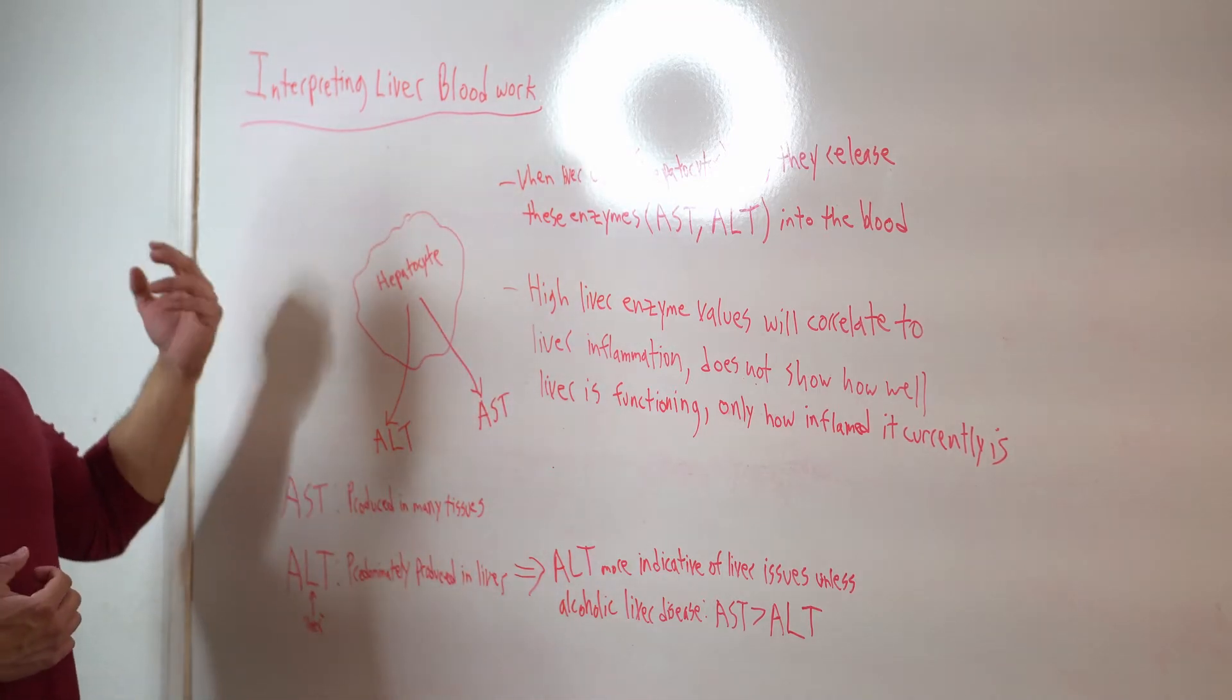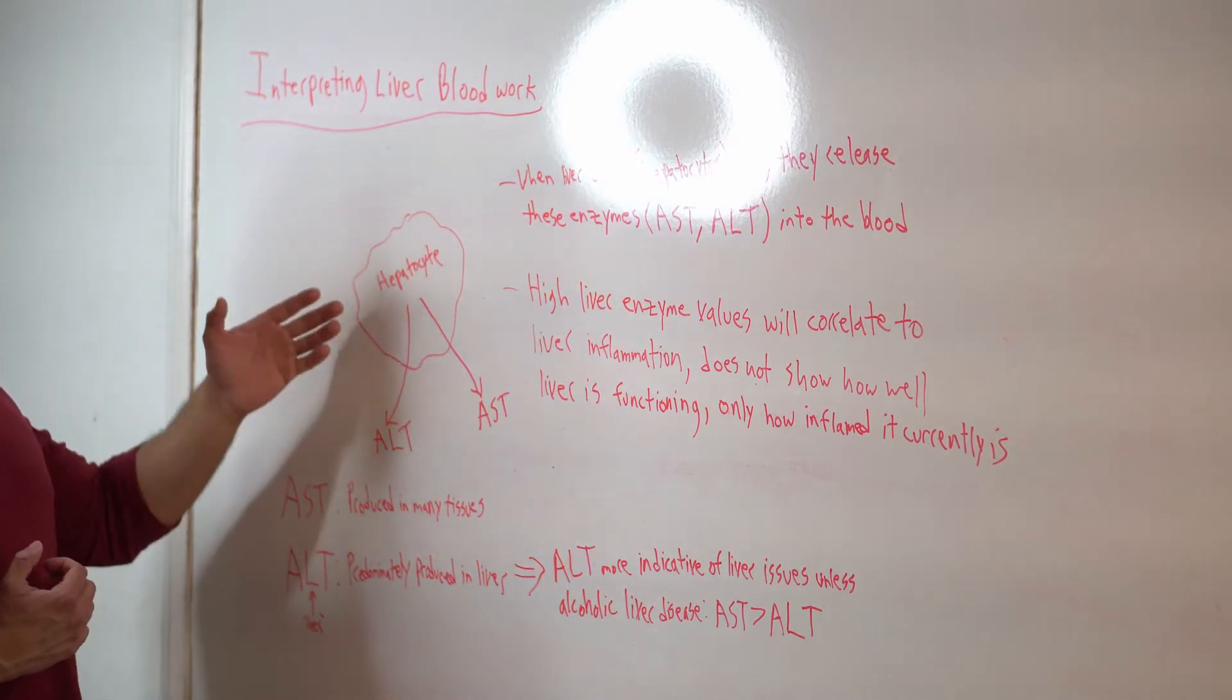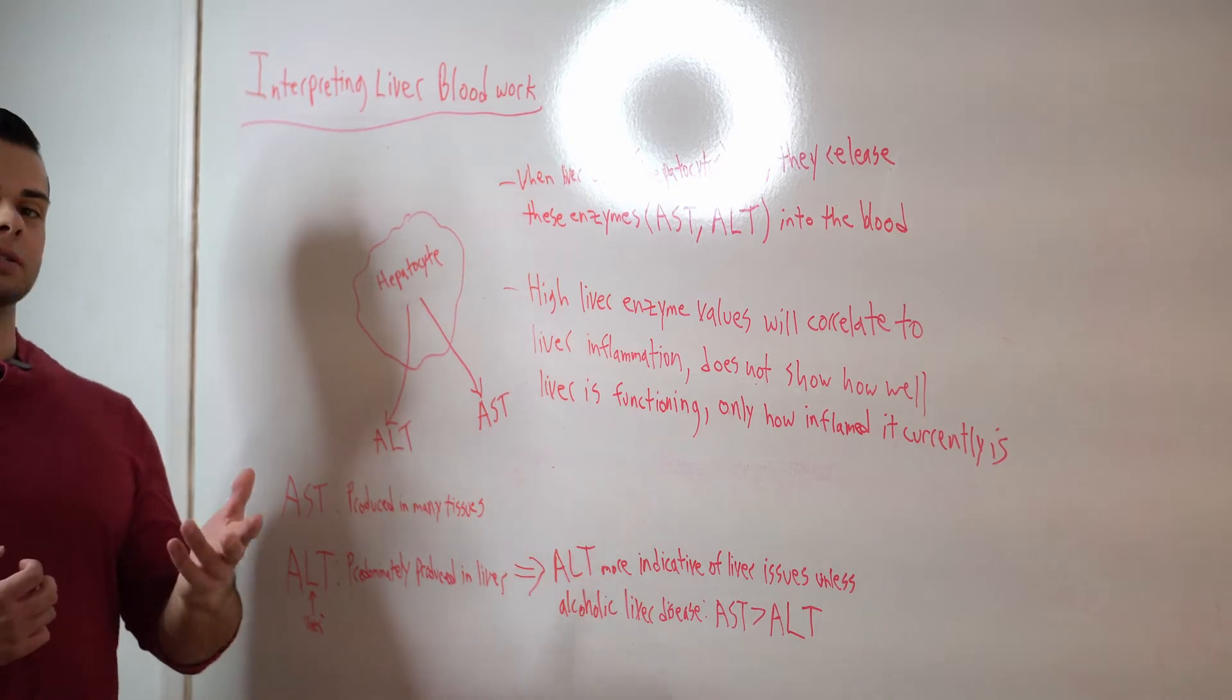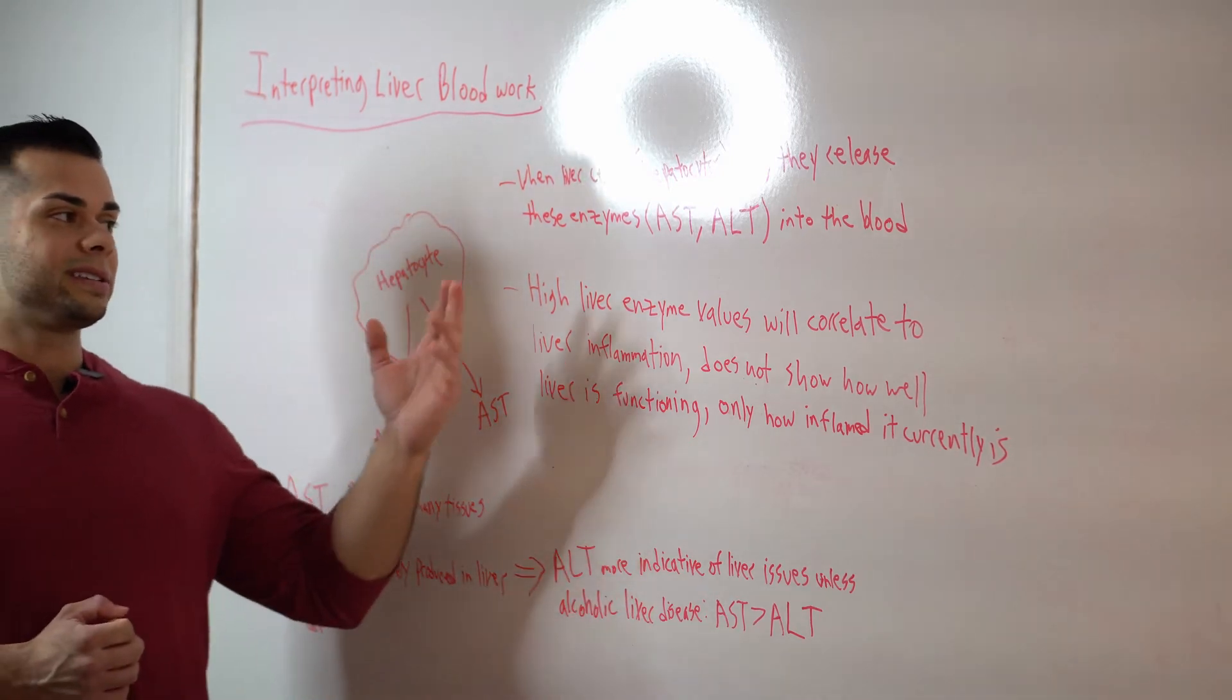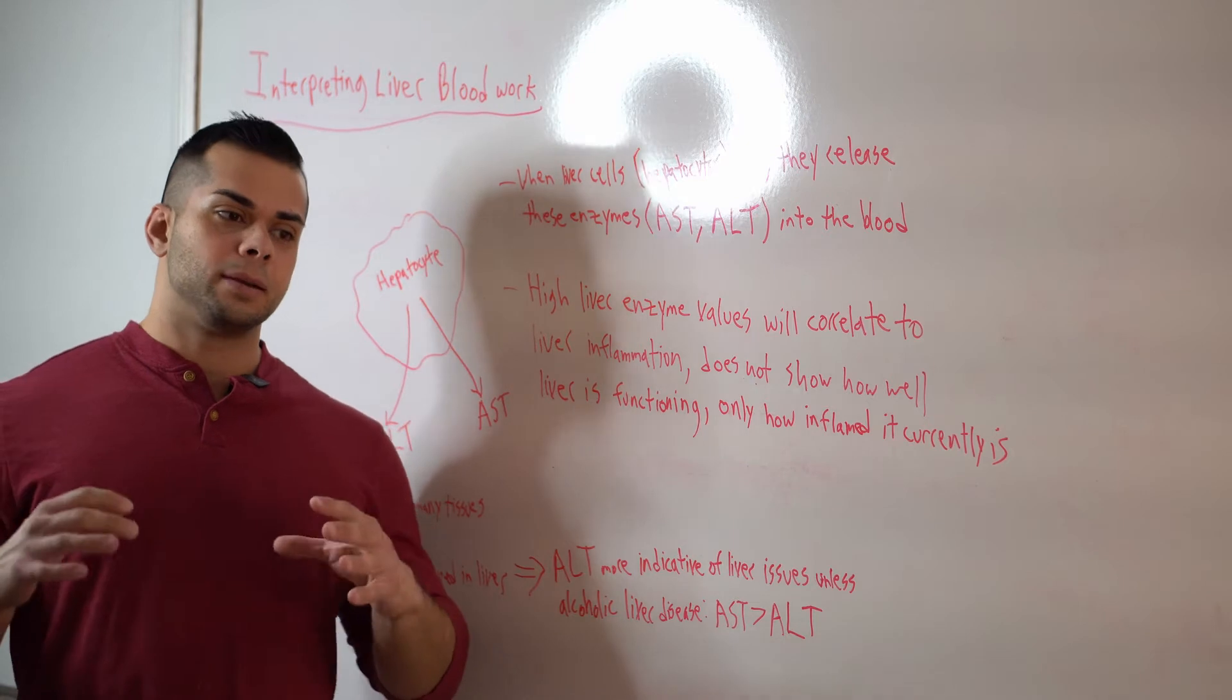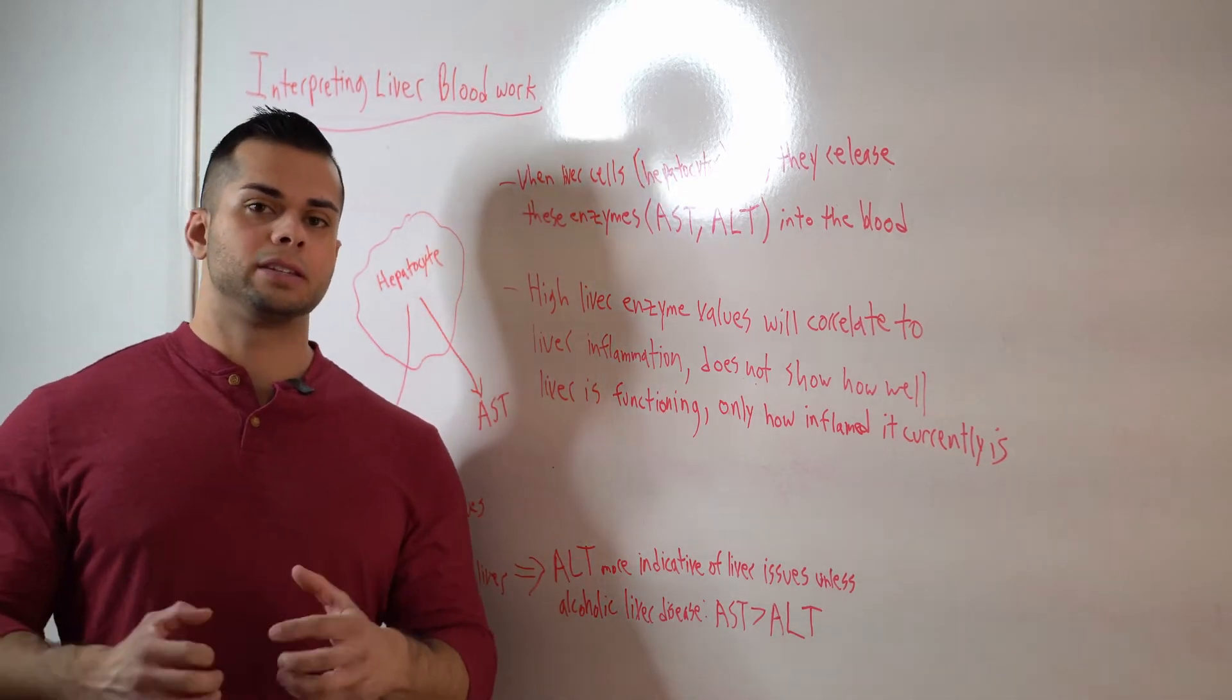Why that is, is because of the liver cell itself, which is also known as the hepatocyte. So in this hepatocyte is where these AST and ALT enzymes are contained. They're contained in these cells.